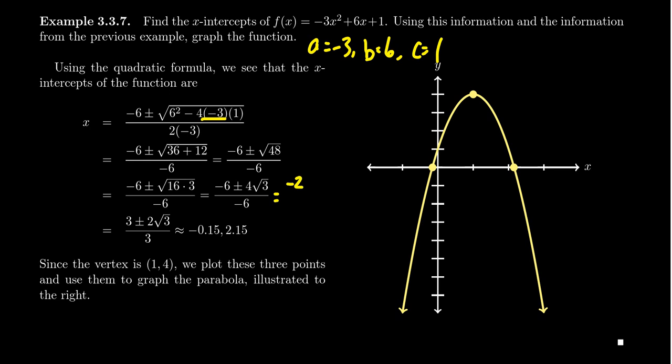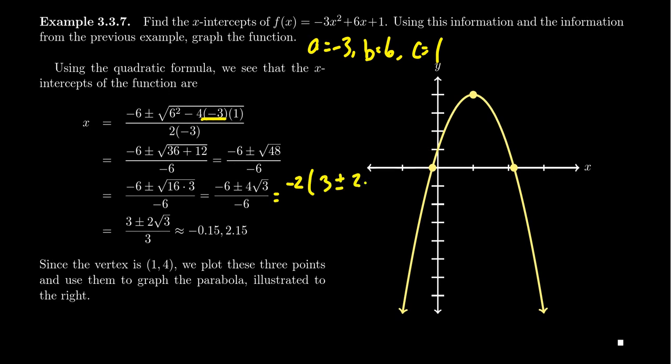If you factor out a negative 2 from the numerator, that would leave behind a 3 plus or minus 2 times the square root of 3 all over negative 6. And then negative 2 goes into negative 6 three times, thus giving us what we have right here.